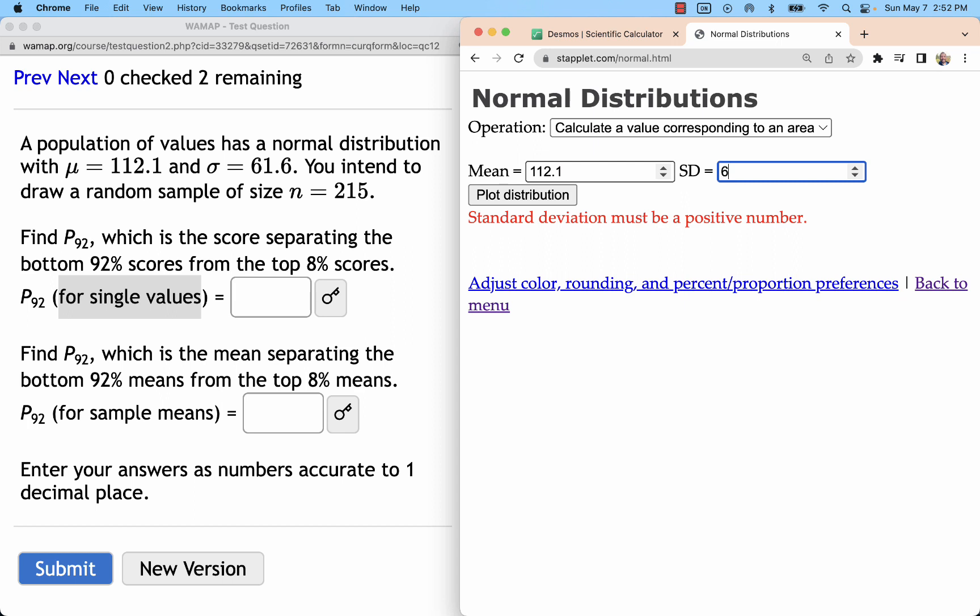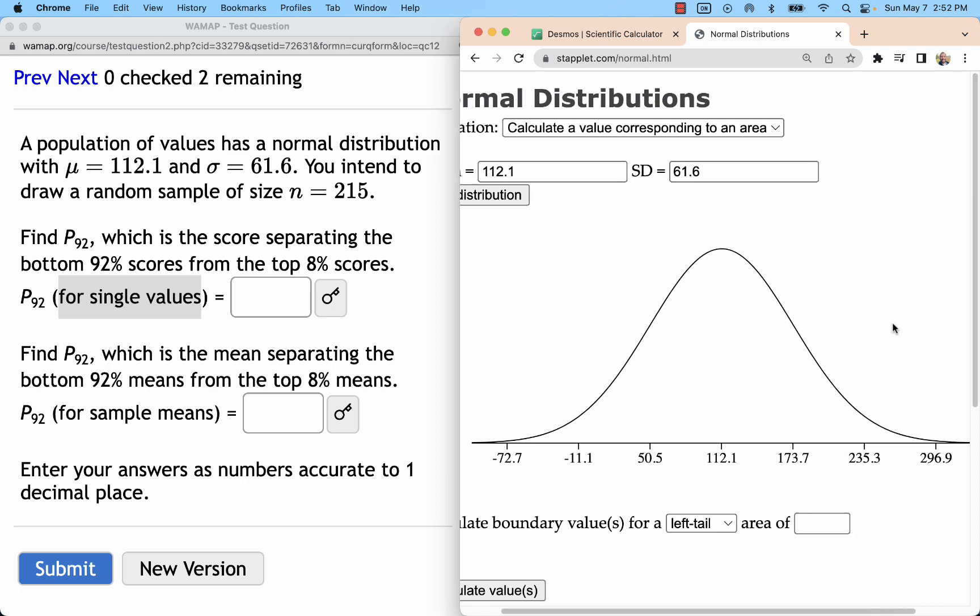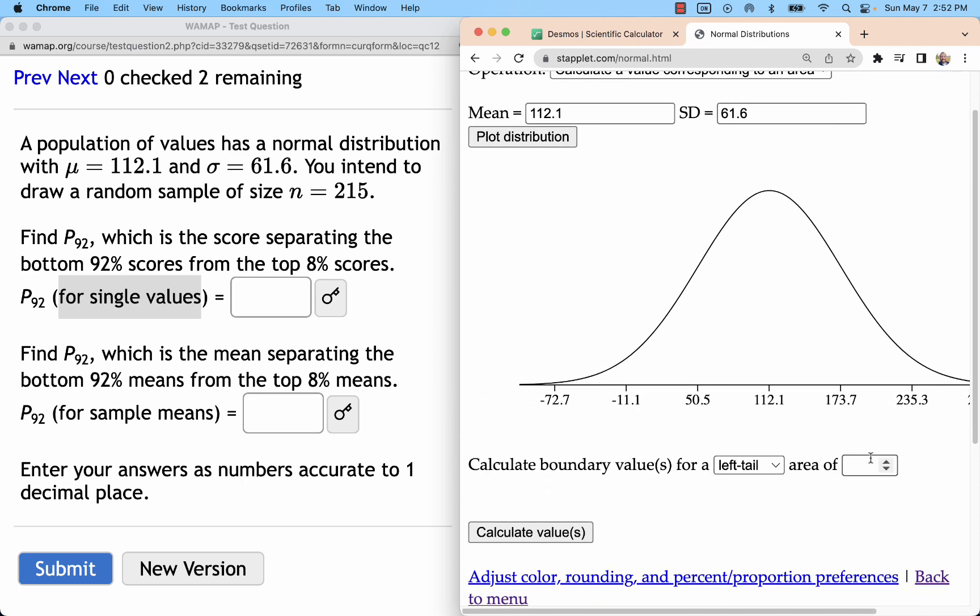Here I have 112.1 and 61.6, creating that bell curve. The left tail or bottom 92% will have an area of 0.92 associated.